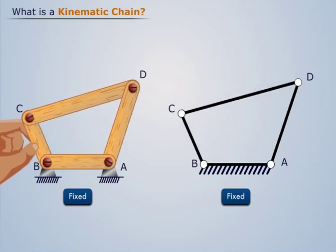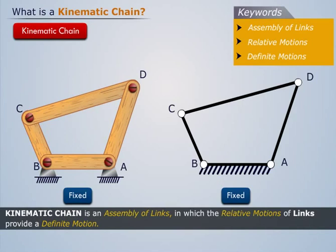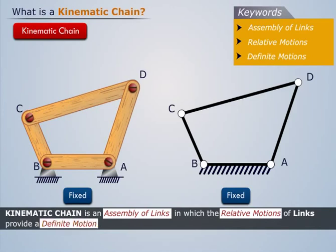Such an arrangement is called a kinematic chain. Thus, we can say that kinematic chain is an assembly of links in which the relative motions of links provide a definite motion.